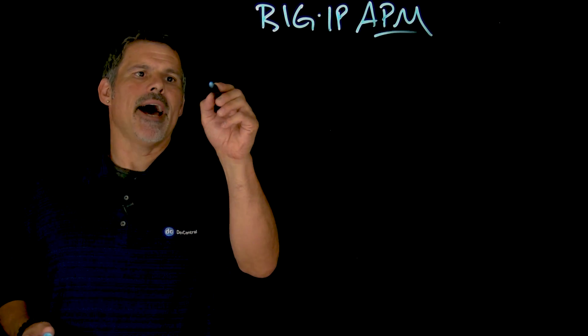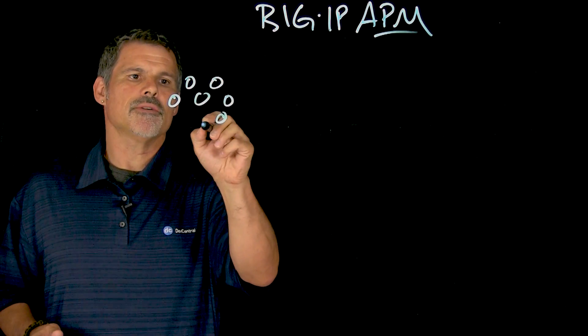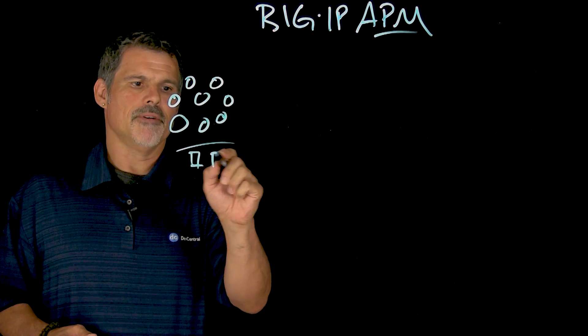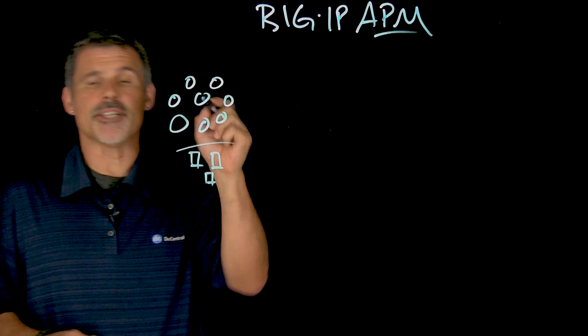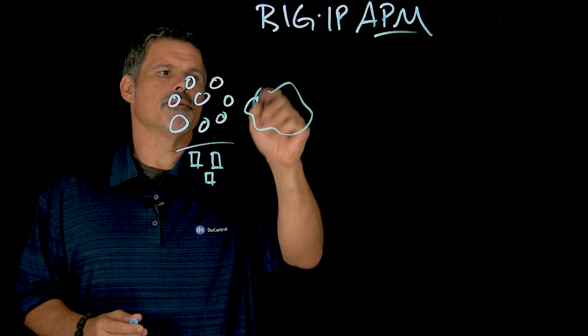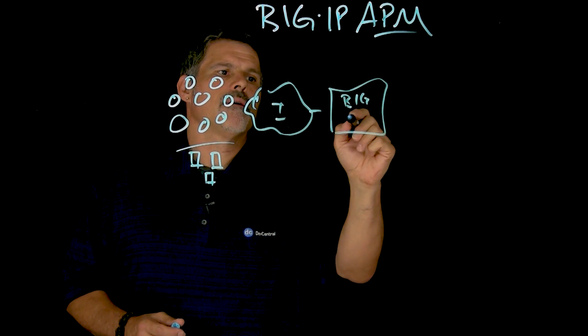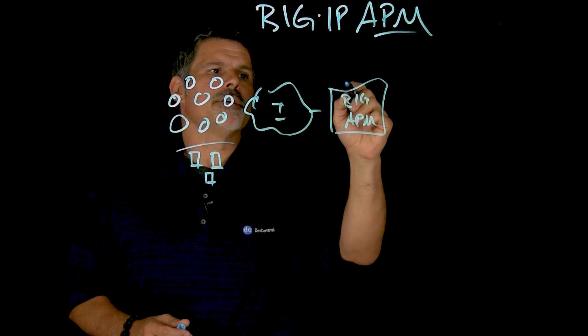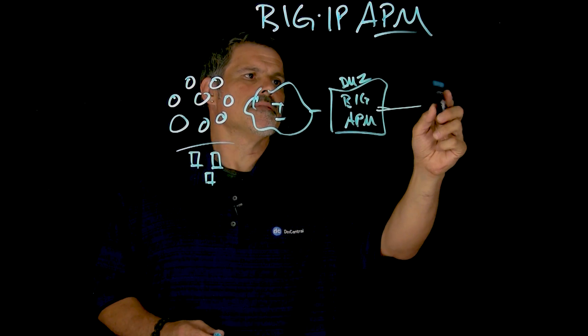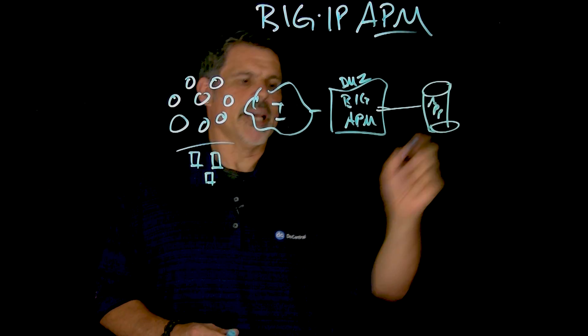So as I mentioned, we have distributed users all over the globe, accessing from various types of clients. These can be employees, they can be contractors, they can be partners, going through the big, bad internet, and hitting APM. APM, this happens to be in the DMZ often. And then let's just give it a database right here for your applications.